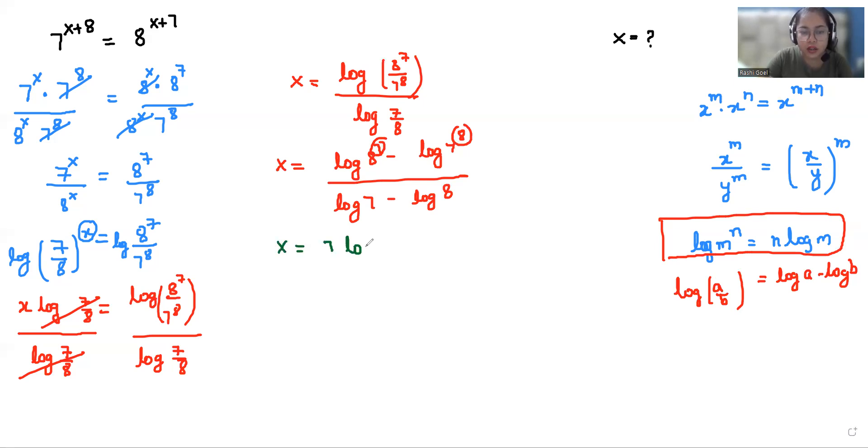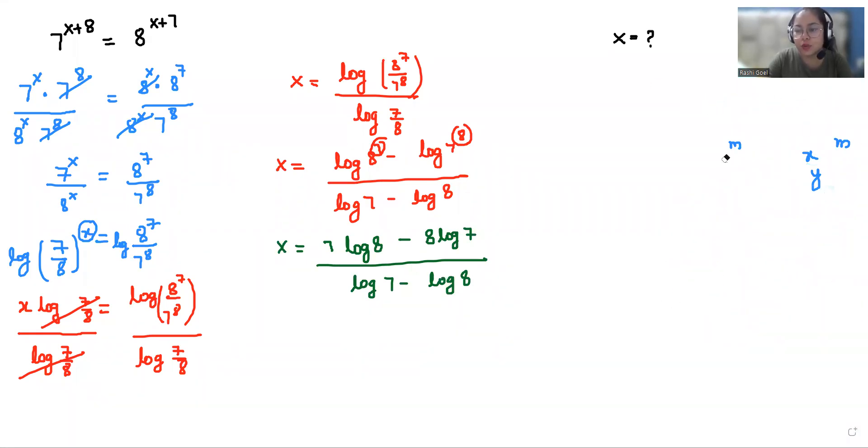Now we have the values of log 7 and log 8, so we are going to put the values. The value of log 7 is 0.8451 and the value of log 8 is 0.9031.